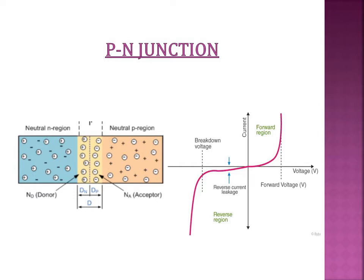Since the movement of electrons from N-type to P-type and of holes from P-type to N-type is maximum around the junction, a depletion region is formed around the junction. This depletion region consists of immobile charge carriers. When electrons move from N-type to P-type, they leave behind positive donor ions, and when holes move from P-type to N-type, they leave behind negative acceptor ions. These ions constitute the depletion region around the junction.